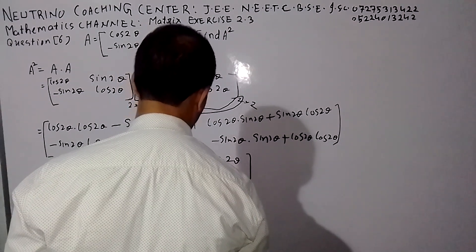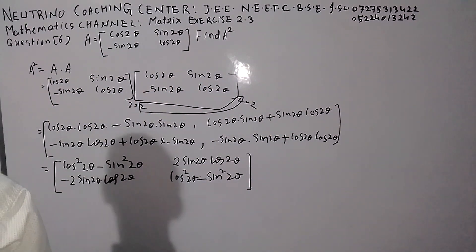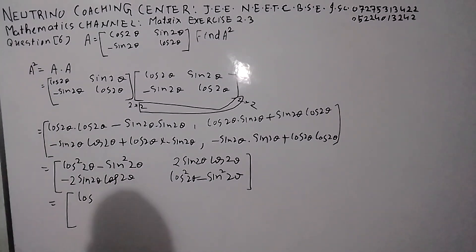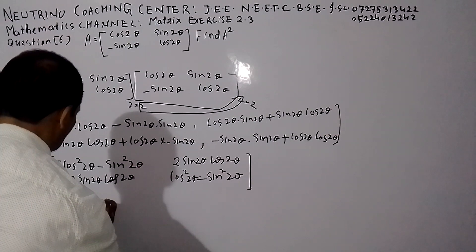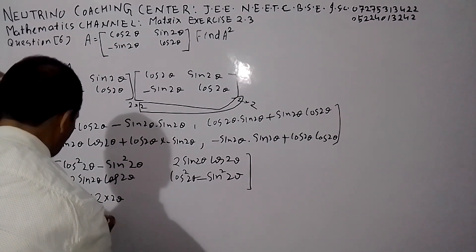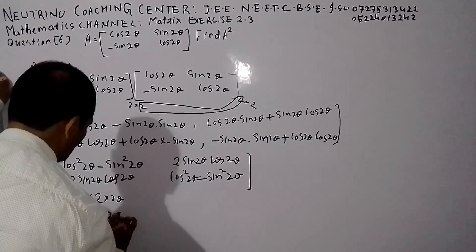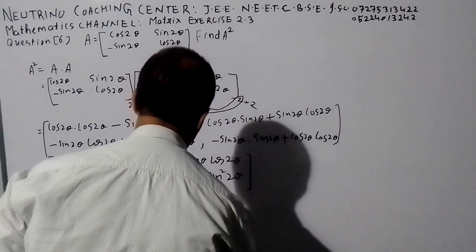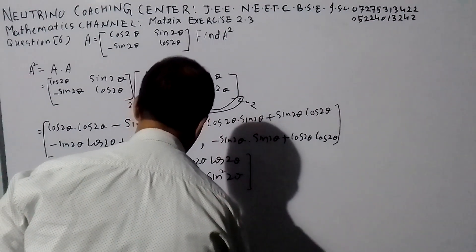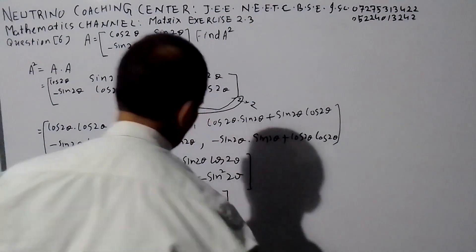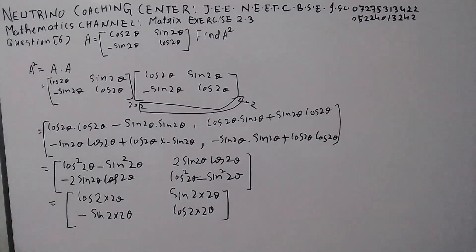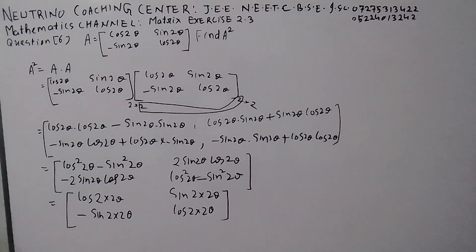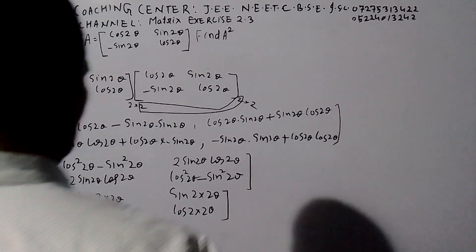Using trig identities: sin(2·2θ) = 2·sin(2θ)·cos(2θ) = sin(4θ). And cos²(2θ) minus sin²(2θ) equals cos(2·2θ) = cos(4θ). So the result simplifies using these double angle identities.